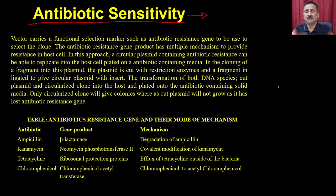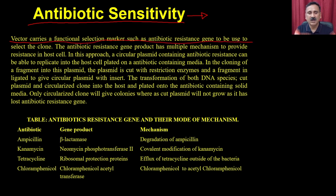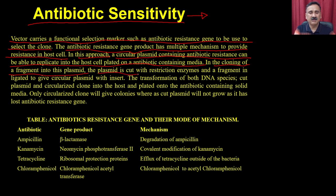If you have antibiotic resistance genes, most of them inactivate the exogenously added antibiotics and allow the proliferation of transformed bacterial cells. In this case, the vector carries a functional selection marker such as an antibiotic resistance gene to select the clones. The antibiotic resistance gene product has multiple mechanisms to provide resistance. A circular plasmid containing antibiotic resistance can replicate in the host cell plated onto antibiotic-containing media. The plasmid is cut with a restriction enzyme, a fragment is ligated to give a circular plasmid with insert, and both DNA species are transformed into the host and plated onto antibiotic-containing solid media.